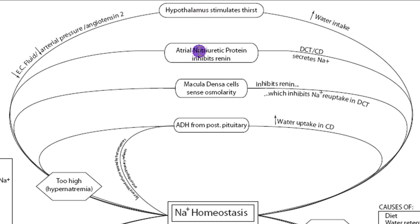ANP, or atrial natriuretic peptide, is a protein released by the right atrium when there's an increase in blood pressure — primarily sensing the increased water that often comes with increased sodium. ANP travels to the distal convoluted tubule and collecting duct and inhibits the renin system. By inhibiting the renin system, sodium is lost, blood vessels dilate, and blood pressure returns to normal.